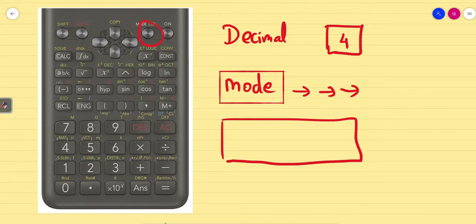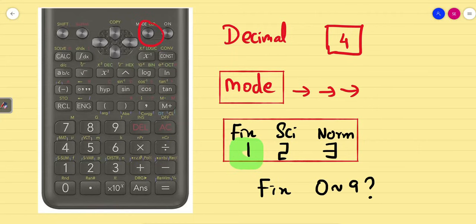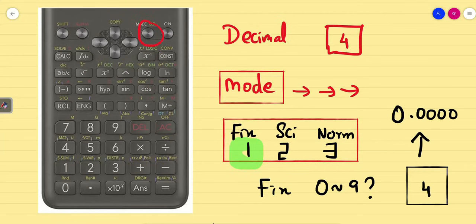The screen you will get shows Fix, Sci, and Norm. You will have options 1, 2, and 3. Our job is to fix the decimal. When you click 1, it will ask you again: Fix 0 to 9. I want to fix 4 decimals, so click 4. Once you click 4, you can see the output 0.0000. Now 2 steps are done.